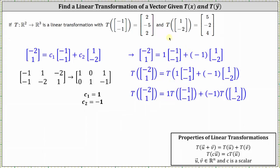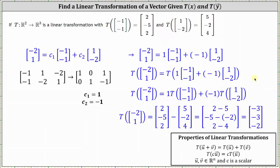This is the form we needed because we now know both transformations. Performing the substitution: 1 times T(-1, -1) is just (2, -5, 2), and then plus (-1) times T(1, -2) is minus (5, -2, 4). To find the transformation of (-2, 1), we subtract the corresponding components: 2 - 5 = -3, then -5 - (-2) = -3, and finally 2 - 4 = -2.